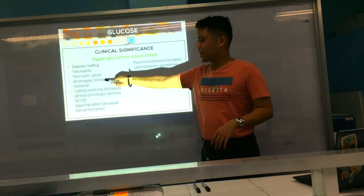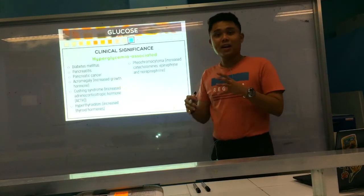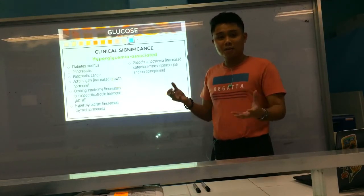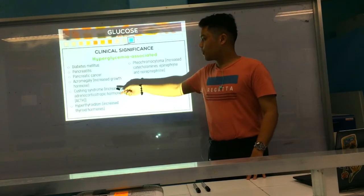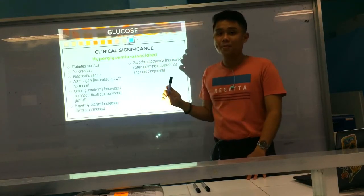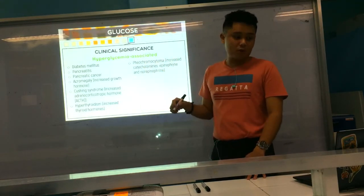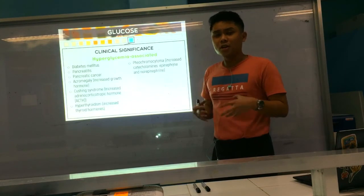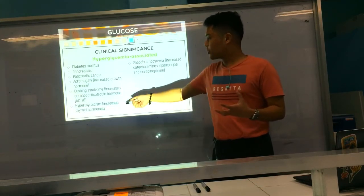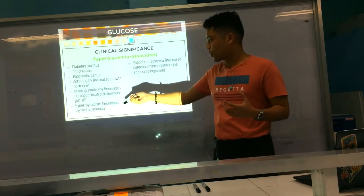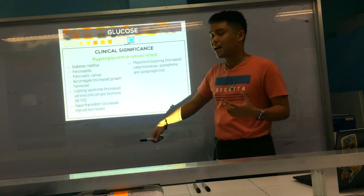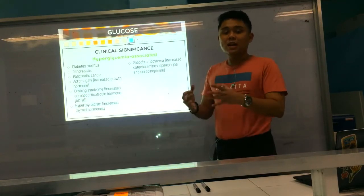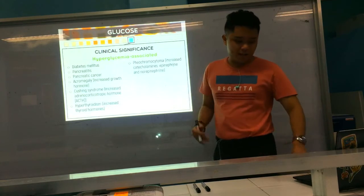The first three — diabetes mellitus, pancreatitis, and pancreatic cancer — are due to pancreatic problems causing impaired insulin production. The next four — acromegaly, Cushing syndrome, hyperthyroidism, pheochromocytoma — all cause increases in hyperglycemic hormones like growth hormone, ACTH, thyroid hormones, and catecholamines, promoting increased sugar inside the body.